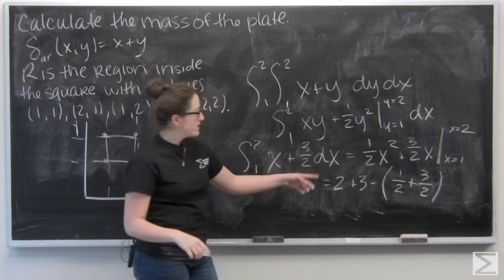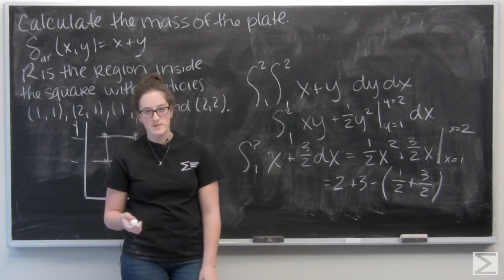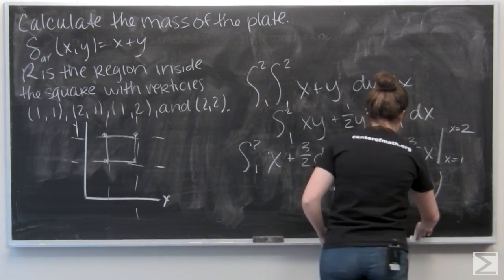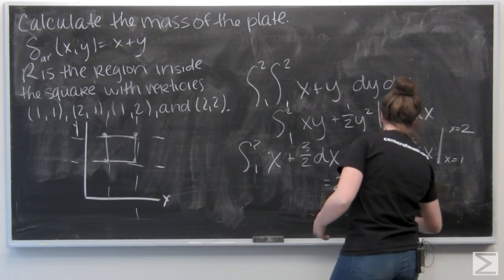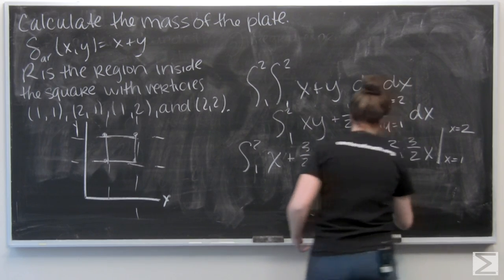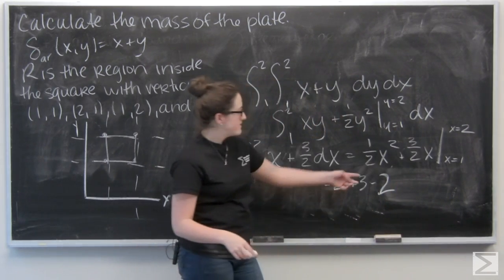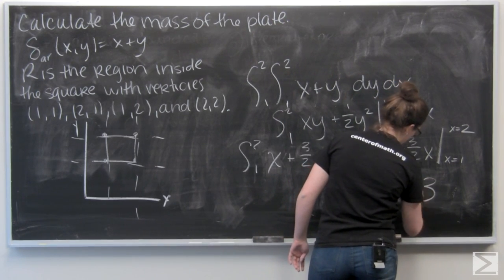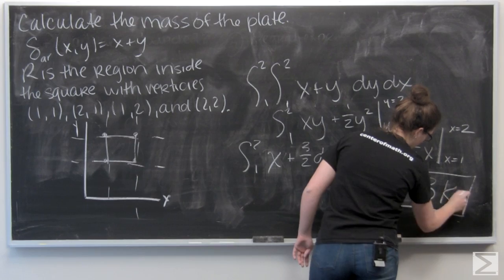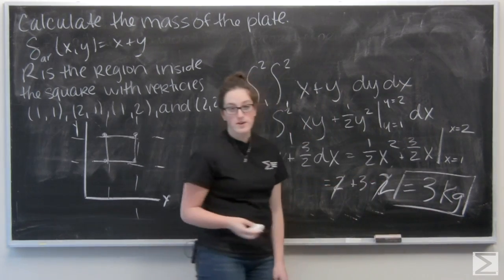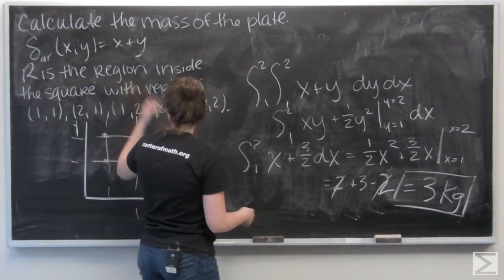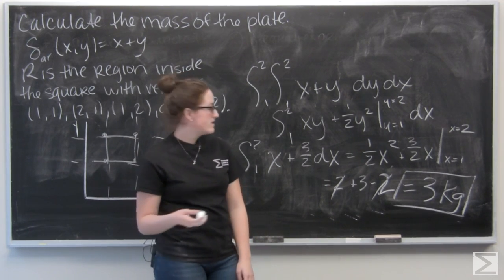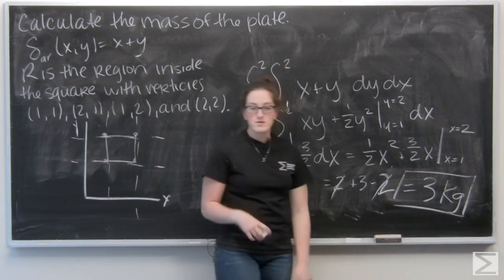So I'm looking at 2 plus 3 minus one-half plus three-halves. Well, this right here is going to be 2, and then a positive and a negative 2 will cancel out. So I'm left with 3. And area density was given in kilograms per meter squared, so my mass is just going to be 3 kilograms.